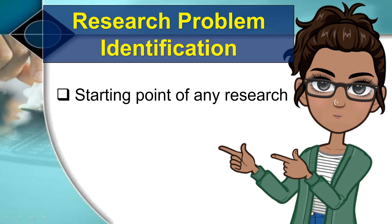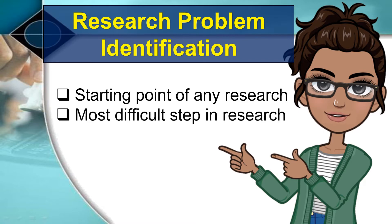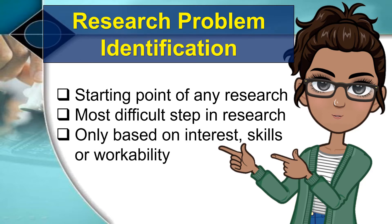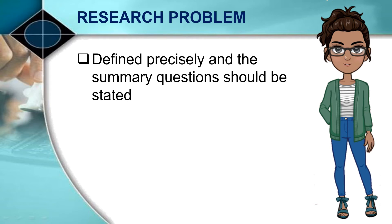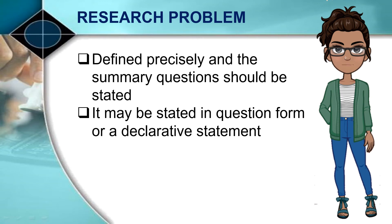The starting point of any research is the identification and definition of the research problem. This step is the most difficult one because, while there are some guidelines in the selection and narrowing down of the problem, these are unlike the technical rules and requirements in the choice of research design and measurements. Often, these are only based on interests, skills, or workability. It is the basic issue or area of concern — the situation which exists and how it ought to be. It should be defined precisely, and the summary questions which will be answered by the proposed research should be stated. The problem may be stated in question form or given as a declarative statement.